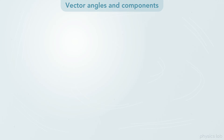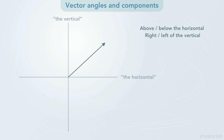In some cases, a problem might describe an angle above or below the horizontal, or right or left of the vertical, which are just horizontal and vertical lines passing through the start of the vector. If we're using an xy coordinate system, these might align with the x and y axes, and the horizontal could also align with the ground, but it depends on the problem.